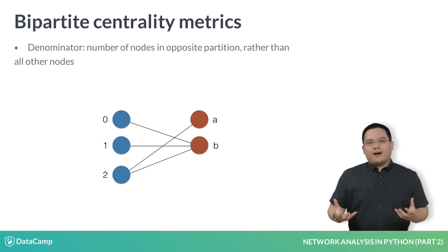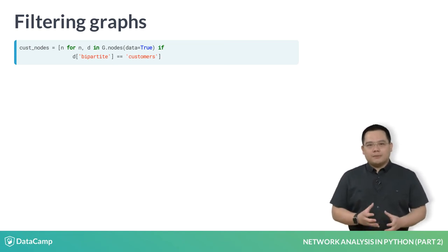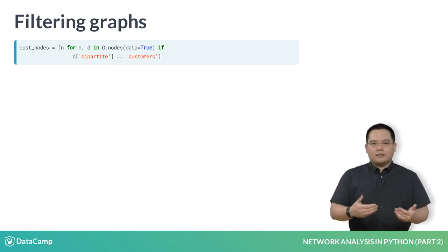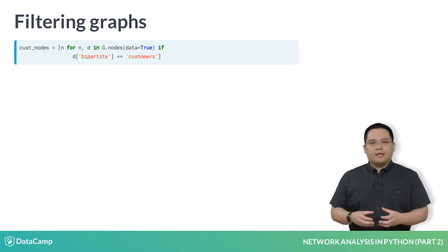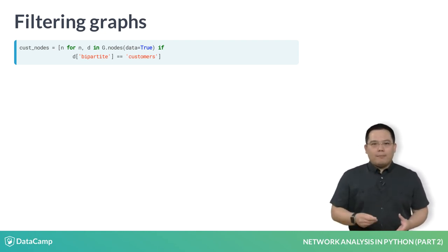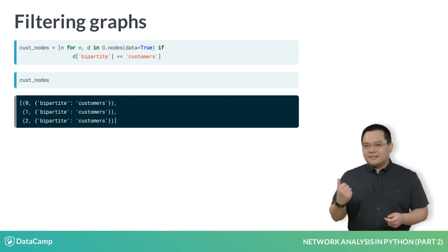Because NetworkX doesn't provide an explicit bipartite graph class, you will need to learn how to filter a graph for a node set. This is most commonly accomplished using list comprehensions. For example, if I want to get the nodes in the customers partition, I can use the list comprehension shown in input 1, in which we loop over each node N and its associated metadata dictionary D in the graph. We include nodes only if the bipartite key's value in D is customers. Let's inspect that variable, cust_nodes — note how there are only customer nodes contained in that list.